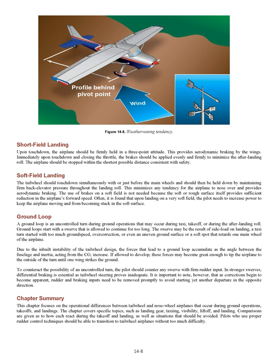Short Field Landing: upon touchdown, the airplane should be firmly held in a three-point attitude. This provides aerodynamic braking by the wings. Immediately upon touchdown and closing the throttle, the brakes should be applied evenly and firmly to minimize the after-landing roll. The airplane should be stopped within the shortest possible distance consistent with safety. Soft Field Landing: the tailwheel should touch down simultaneously with or just before the main wheels and should then be held down by maintaining firm back elevator pressure throughout the landing roll. This minimizes any tendency for the airplane to nose over and provides aerodynamic braking. The use of brakes on a soft field is not needed because the soft or rough surface itself provides sufficient reduction in the airplane's forward speed. Often, upon landing on a very soft field, the pilot needs to increase power to keep the airplane moving and from becoming stuck in the soft surface.